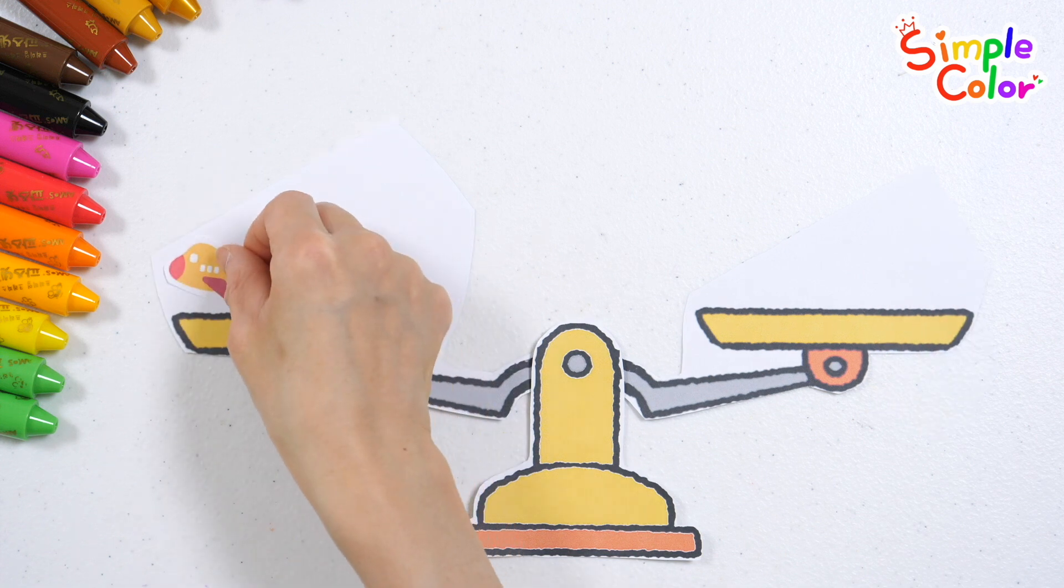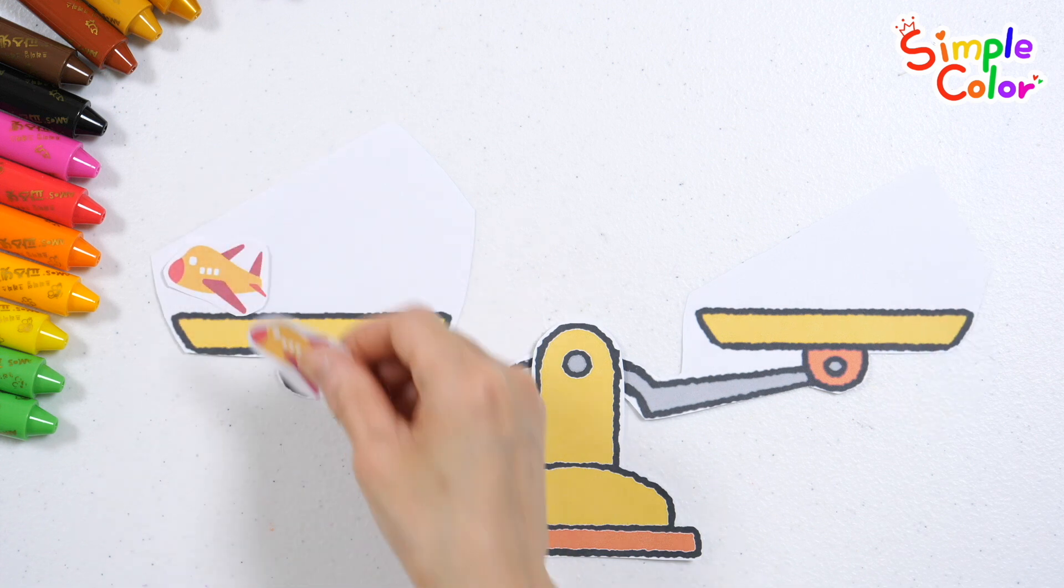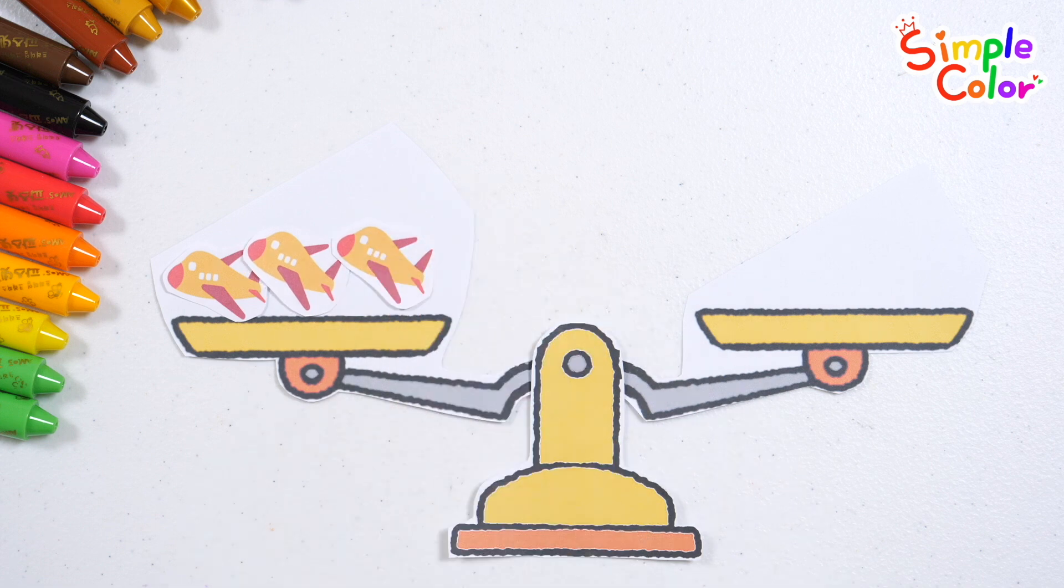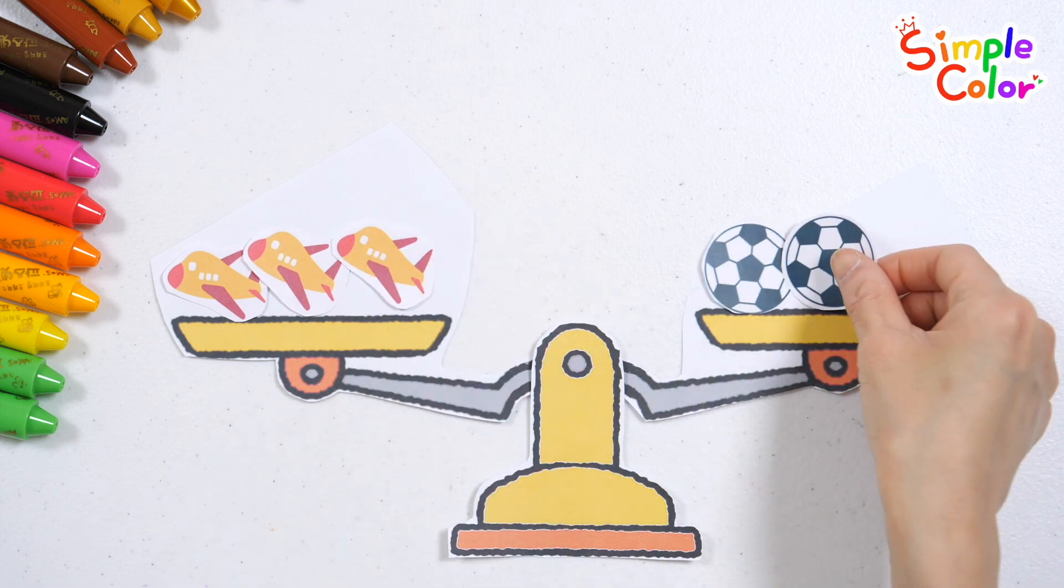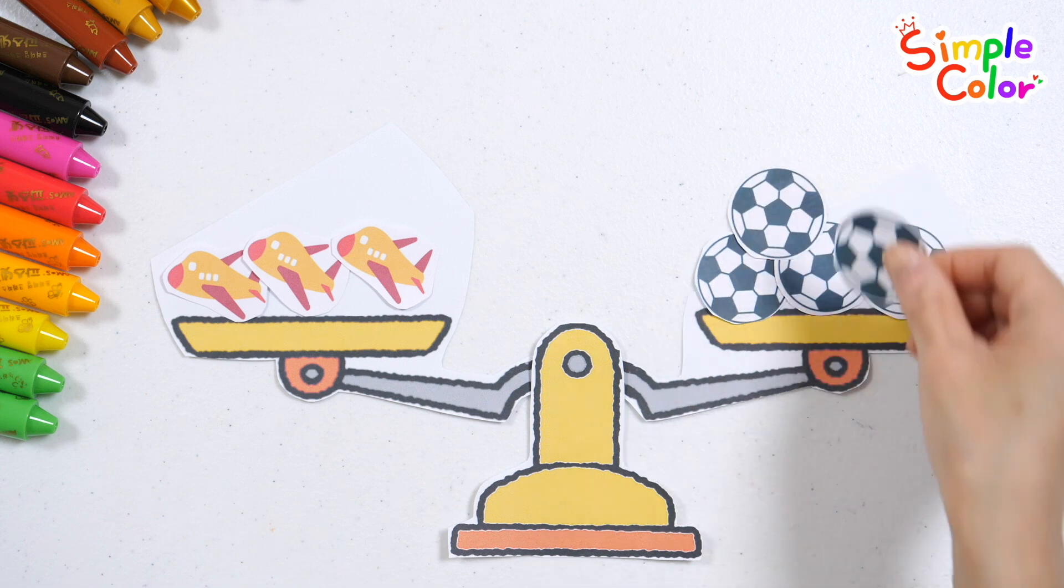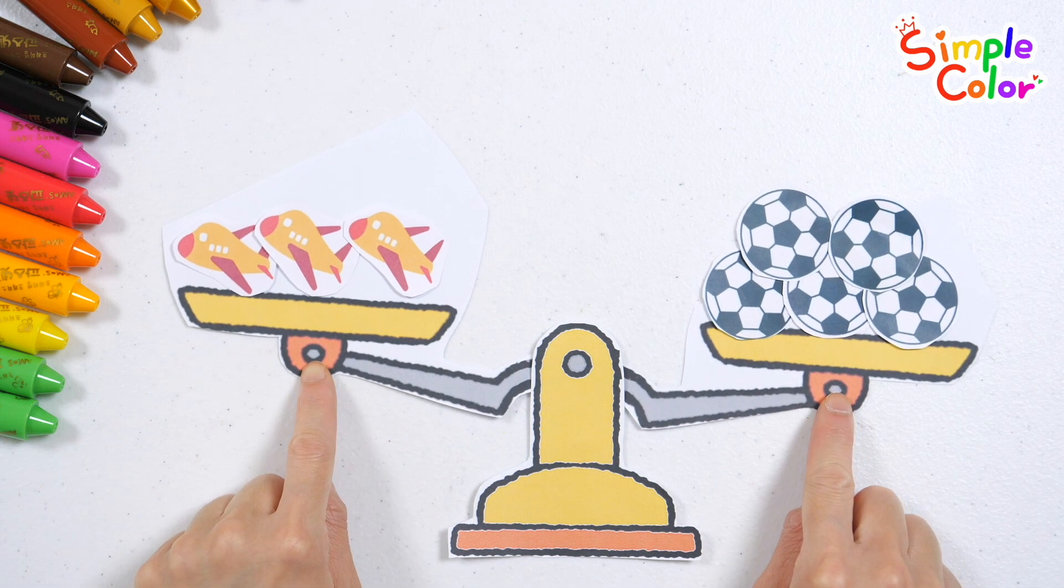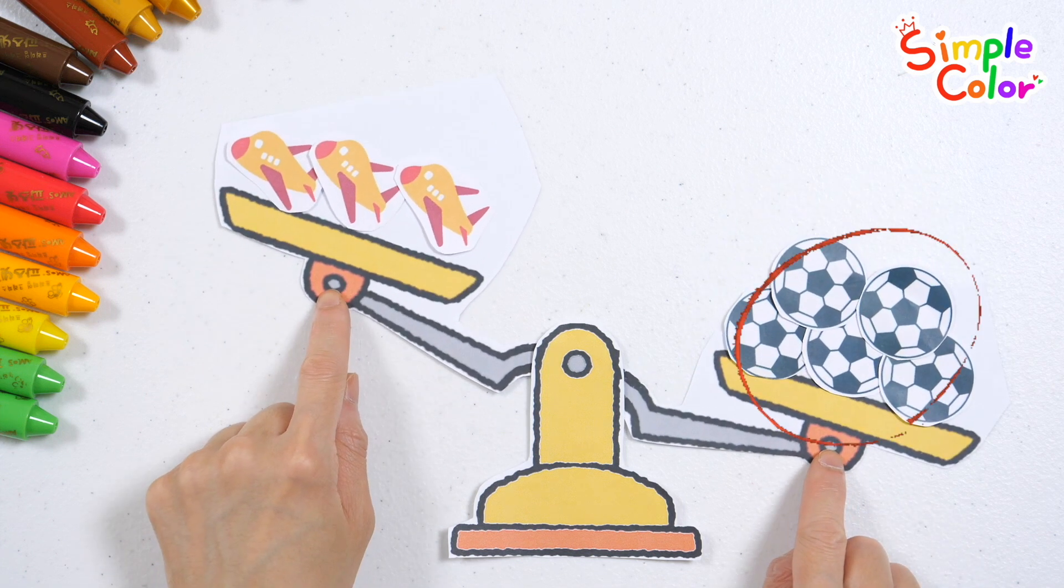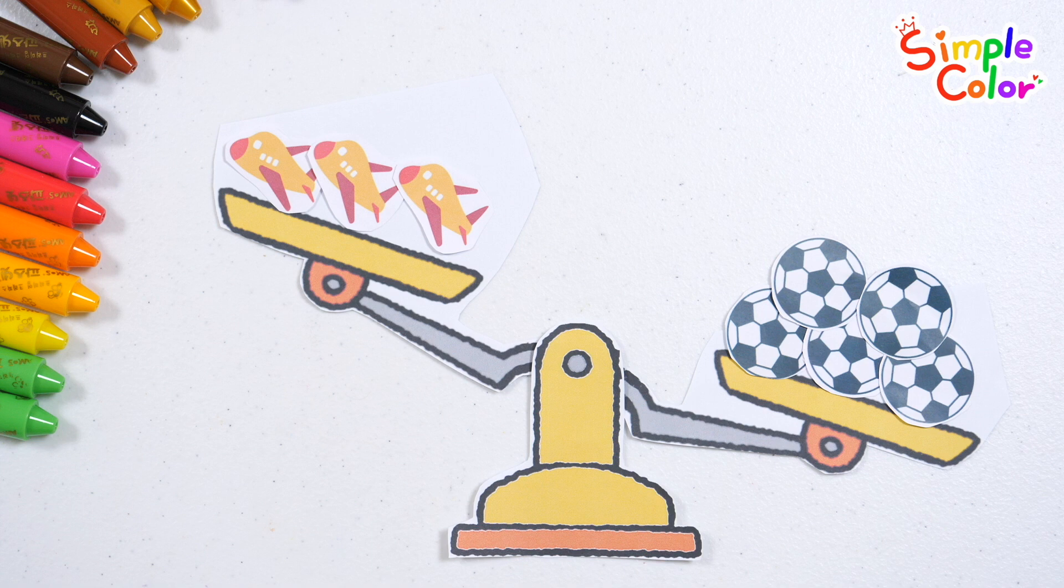Shall we try again? 3 airplanes. 5 balls. That's right! 5 is a number greater than 3.